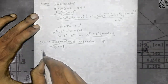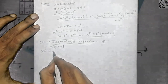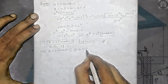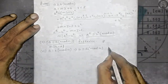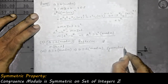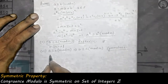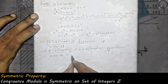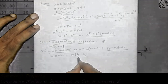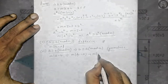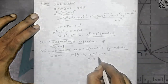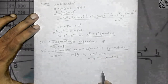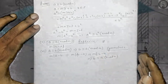The sixth property is the symmetric property: if a is congruent to b modulo m, then b is also congruent to a modulo m. Since a is congruent to b modulo m, m divides a minus b, which means m also divides b minus a. Therefore b is congruent to a modulo m. Hence congruence is symmetric on the set of integers ℤ.